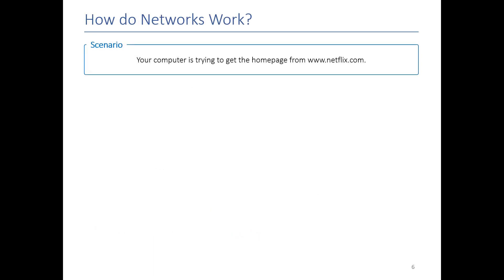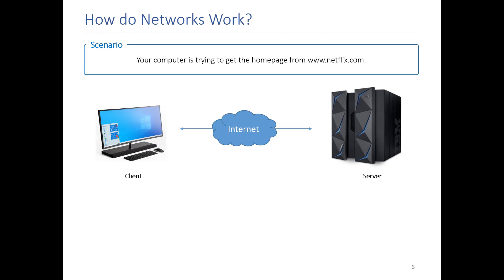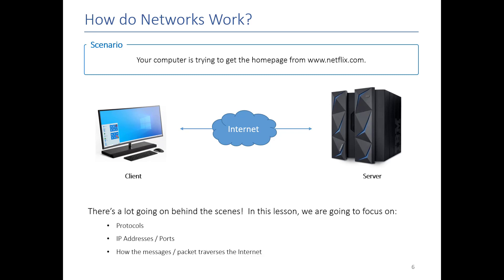Let's go into a little bit more detail using an example of getting the homepage from Netflix.com. Your computer communicates through the internet, goes to the Netflix server, and gets the webpage. This is probably the simplest diagram I can draw, and it's probably too simple because there's a lot going on behind the scenes. I'm going to focus today on protocols, IP addresses, ports, and how those messages traverse the internet, because in each case there are special challenges that we're trying to overcome.